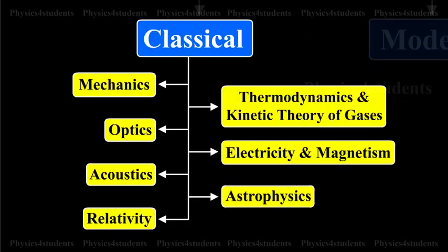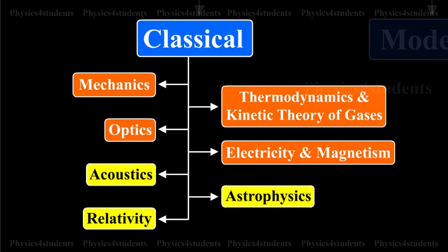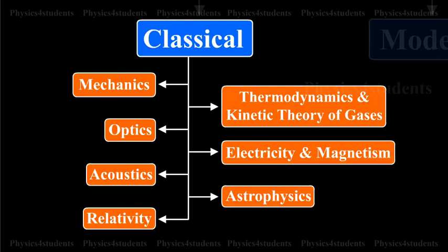Classical physics is further divided into Mechanics, Thermodynamics and kinetic theory of gases, Optics, Electricity and magnetism, Acoustics, Astrophysics, and Relativity.